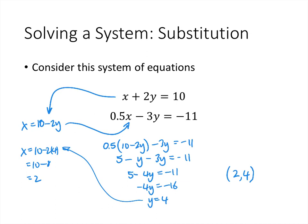Remember that the first number in the ordered pair represents the first variable, which in this case is x, and the second number represents the second variable, which is y.